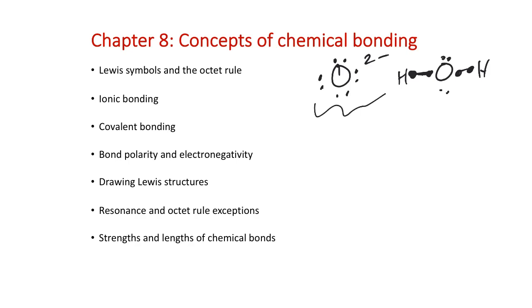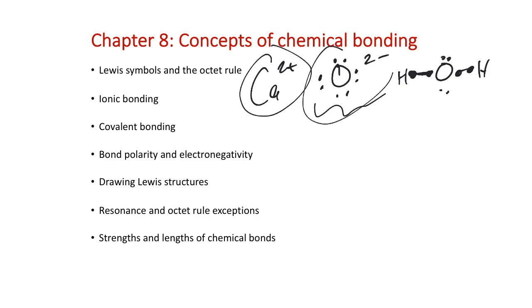We'll talk about ionic bonding in the early part of chapter 8, trying to figure out what holds ionic compounds together. We can appreciate that it's the electrostatic forces of attraction of the anions with cations — for example, forming calcium oxide where we get this strong ionic attraction between the calcium and oxide ions.